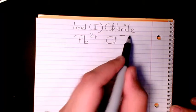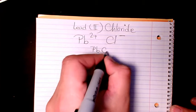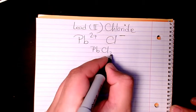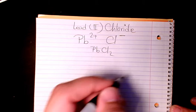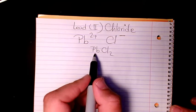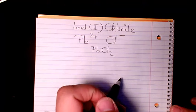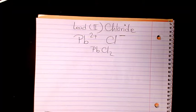Then it will be PbCl₂. The 2 is going to sit here, 1 sits here, we don't show the 1. So that will be PbCl₂. That's the molecular formula for lead(II) chloride.